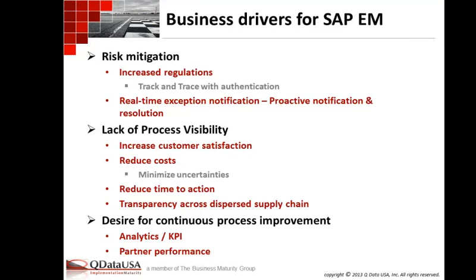The business drivers behind event management: first, risk mitigation. More and more industries are imposing regulations — for example, on serialization and authentication in the pharmaceutical industry, regulations are on the way in the U.S. to help reduce counterfeit product getting into the supply chain, and event management is one of the main drivers that will allow us to provide that authentication scenario. Second, real-time exception and notifications — if we want to reduce risk, we need to get to the fact that we've reached an exception point as quickly as possible. I call that time to insight. If we reduce the time to insight, we can react much quicker and reduce the impact of the issue.